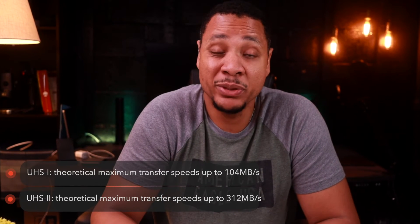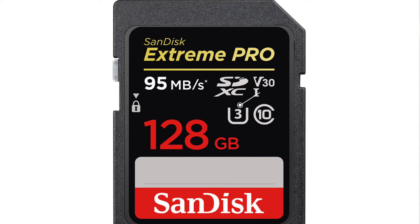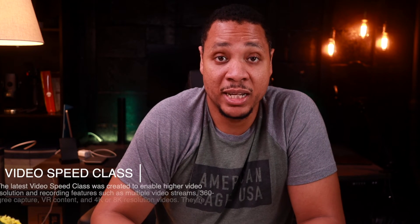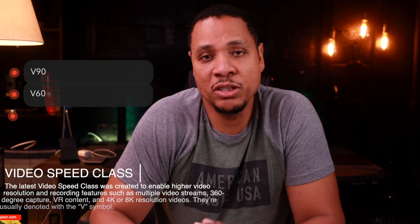Now identifying which UHS card you have is pretty easy. Take a look at the card and you will see the letter U and it will have either a 1 or 3 inside the letter. Some SD cards also come with a video speed class. These are V90, V60, V30, V10, and V6.